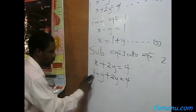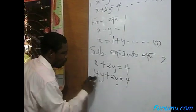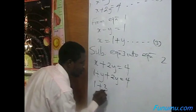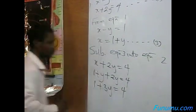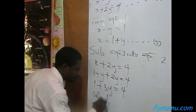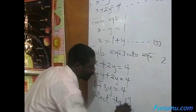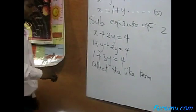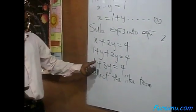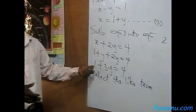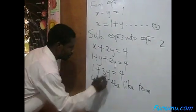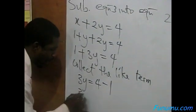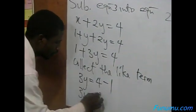From this, simplify. y plus 2y is 3y. So we have 1 plus 3y equal to 4. To collect like terms, add minus 1 to both sides to remove the 1. From there you have 3y equal to 4 minus 1. From there you have 3y equal to 3.